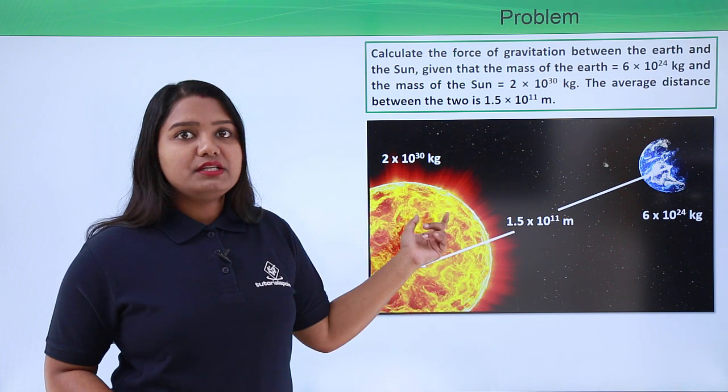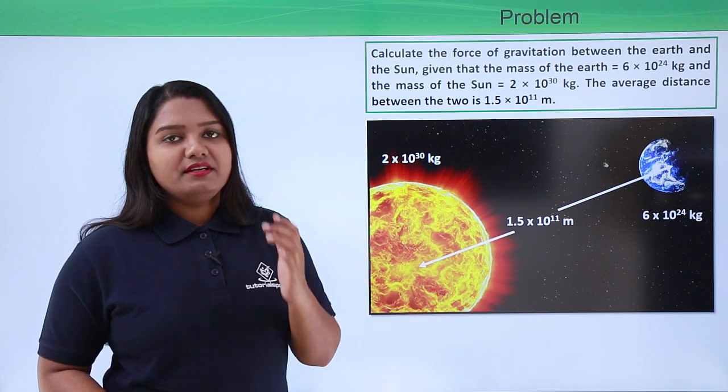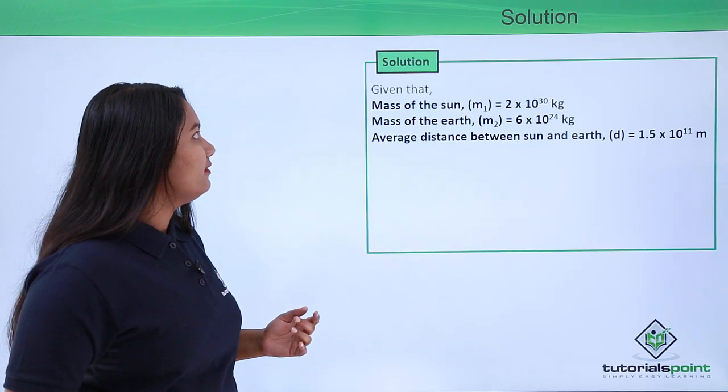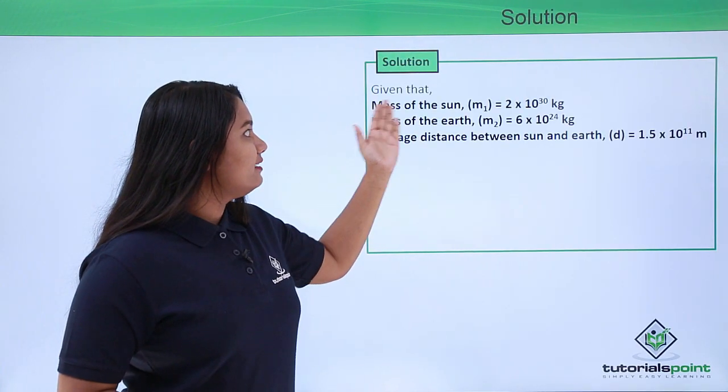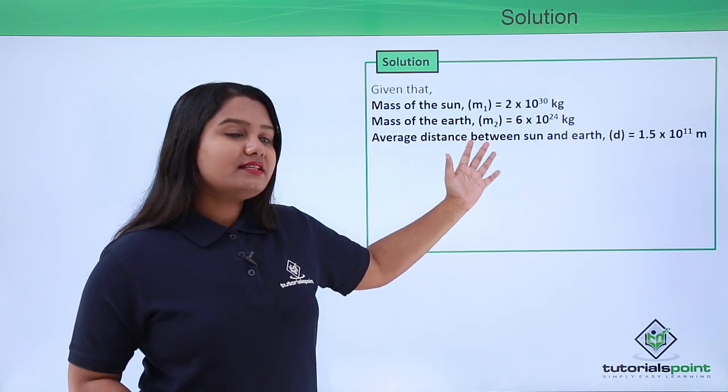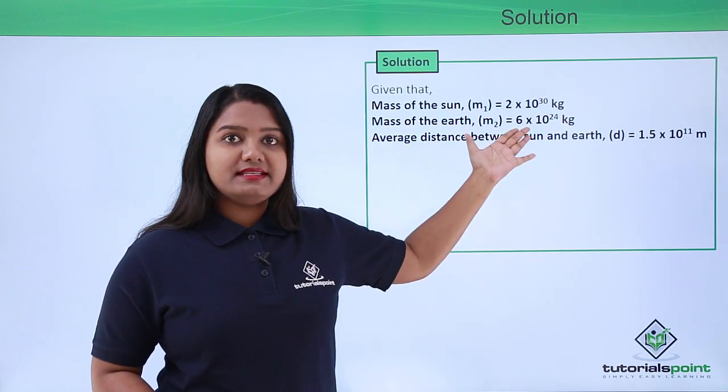With this information we need to find the force of gravity or the gravitational force in this case. Given are the mass of the Sun, the mass of the Earth, and the average distance between the Sun and the Earth.